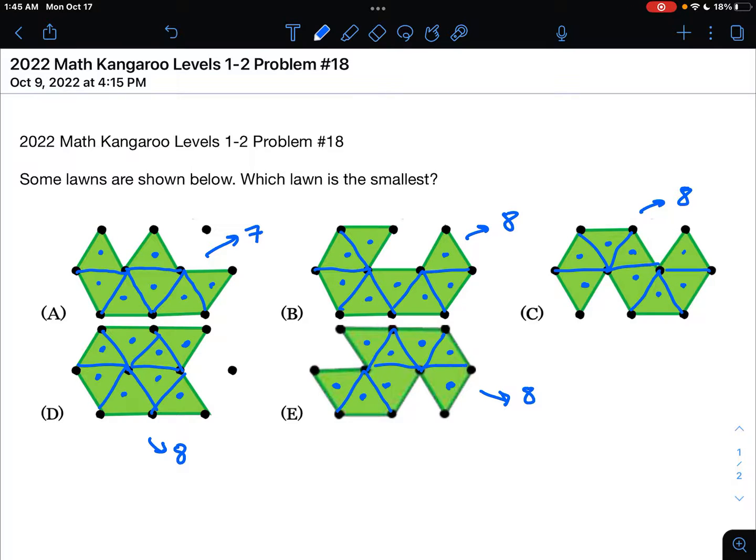So, the question asks us, which lawn is the smallest? Well, we have 1 of size 7, and the rest are size 8. So, we know that answer choice A, that is 7, is going to be the smallest.